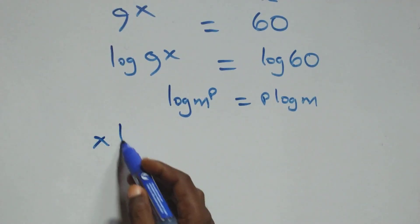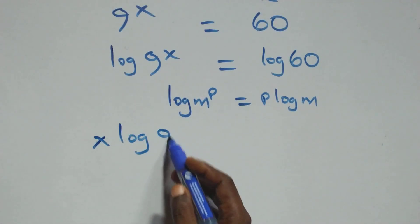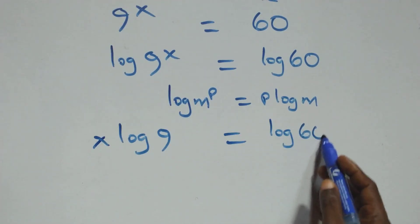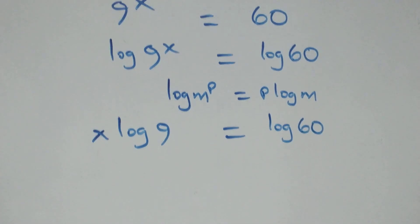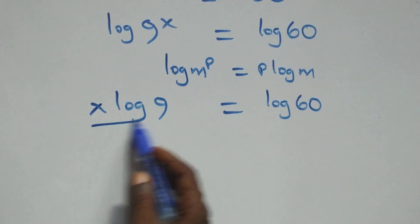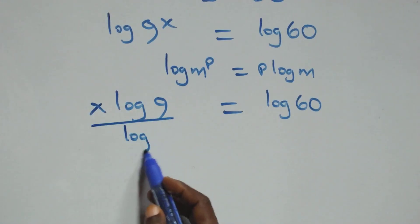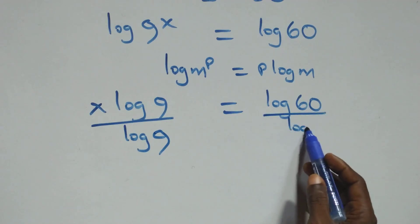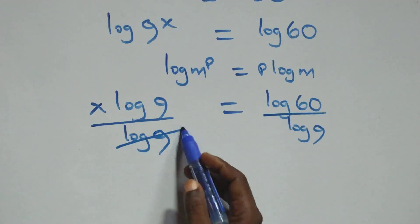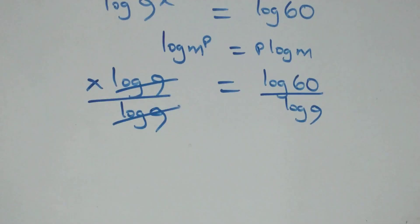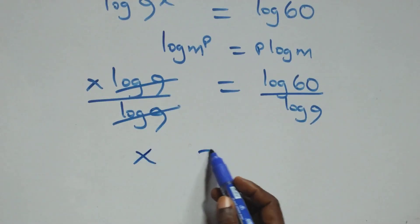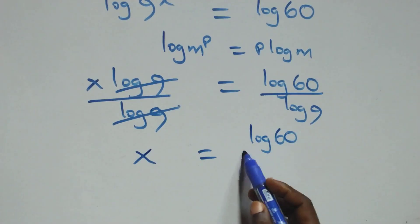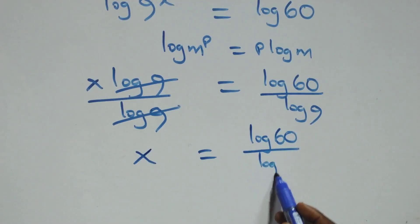Applying the power rule of logarithms, this becomes x times log 9 equals log 60. Then we divide both sides by log 9, and log 9 cancels, so this becomes x equals log 60 over log 9.